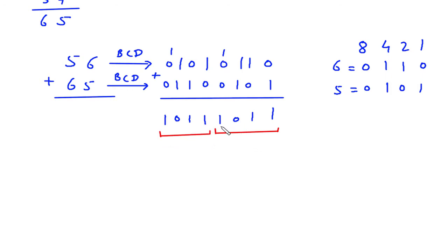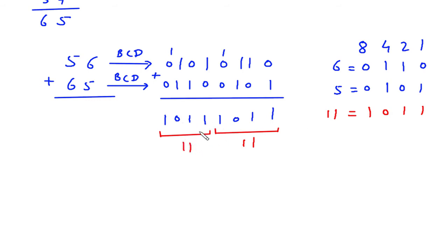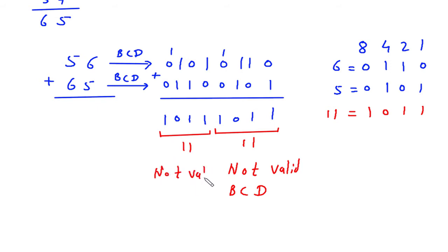Looking at the groups: the first group is 1011, which equals 8 plus 2 plus 1 = 11. Since 11 is greater than 9, this is not valid BCD. The second group is also 1011, which is also 11 and greater than 9. So neither group is valid BCD.